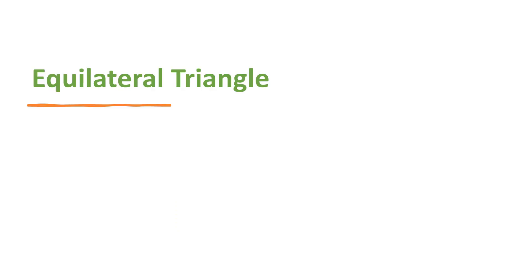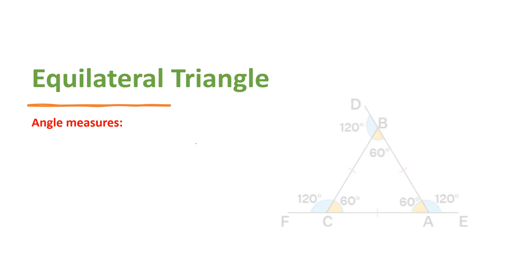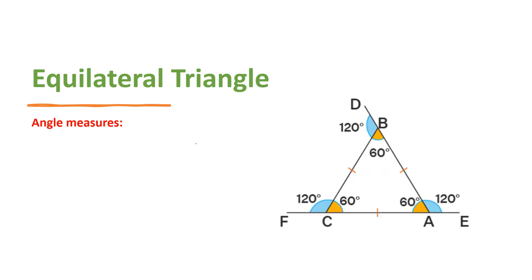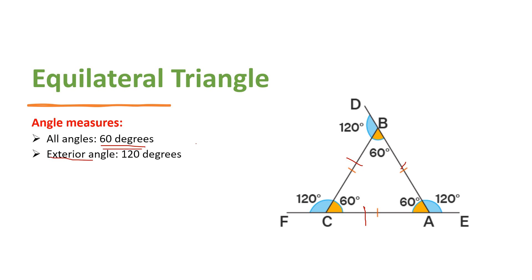Let's go deeper into the equilateral triangle. All sides are equal, so naturally all angles are equal at 60 degrees. We also talk about the exterior angle: if you extend the base, the exterior angle formed is 120 degrees, because 60 plus 120 equals 180. The exterior angle is always 120 degrees for an equilateral triangle.